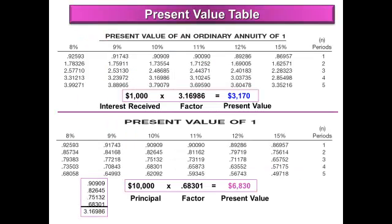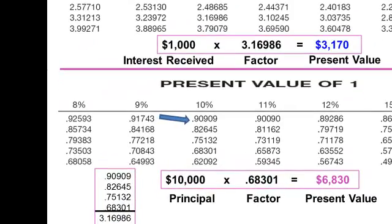Before I can talk about zero interest bearing notes receivable, I need to show you the present value concept. Present value is basically today's value. A dollar a year later is worth 91 cents today, assuming the interest rate is 10%. If you give your banker 91 cents today at a 10% interest rate, a year later that 91 cents will become a dollar. So that dollar a year later has a present value of 91 cents today.